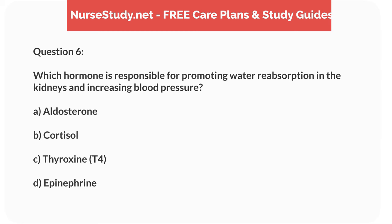Question 6. Which hormone is responsible for promoting water reabsorption in the kidneys and increasing blood pressure? A. Aldosterone. B. Cortisol. C. Thyroxine (T4). D. Epinephrine.